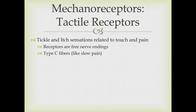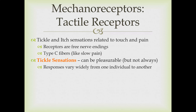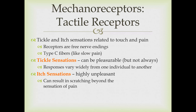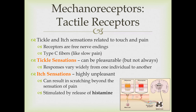Tickle and itch are also related to touch and pain. The receptors are free nerve endings, and information is carried along type C fibers like slow pain signals. Tickle sensations are usually considered pleasurable with widely varying responses. Itch can be more unpleasant than pain—some people will scratch beyond the sensation of pain just to relieve itching. Itch receptors can be stimulated by the release of histamine, which is part of an allergy response. Itching has its own term: pruritus, not to be confused with proprioception.